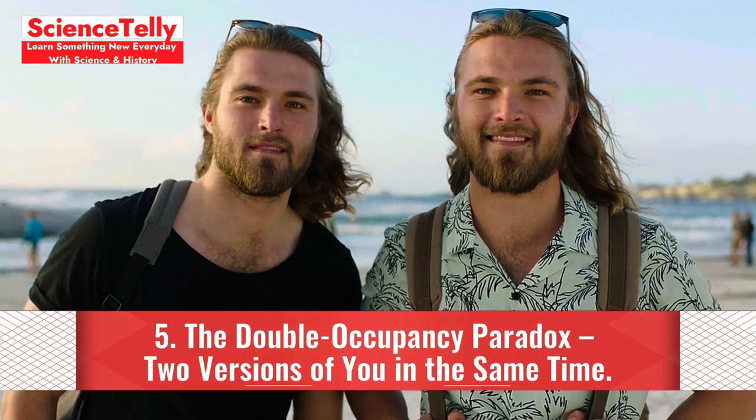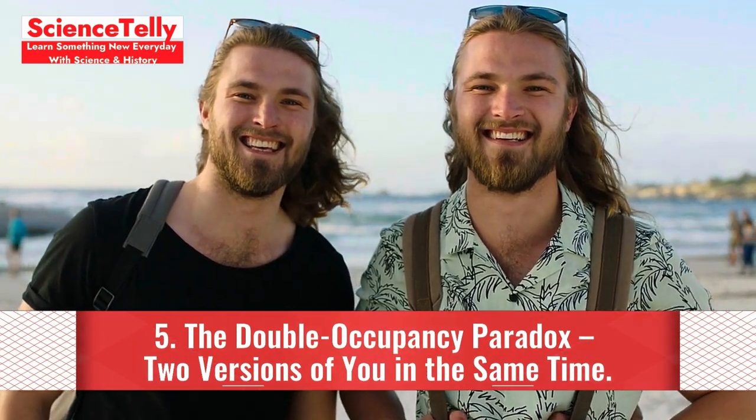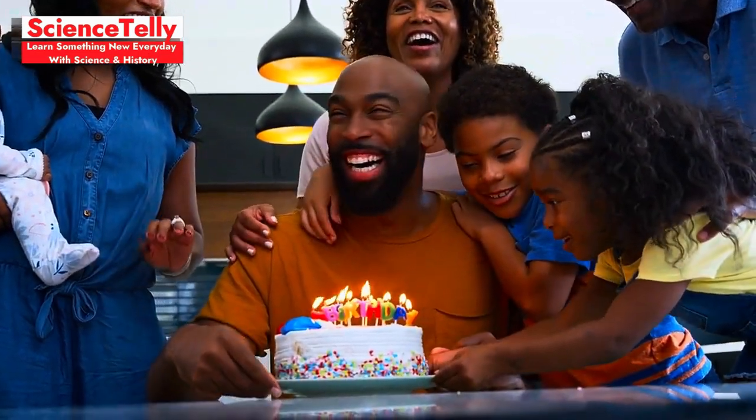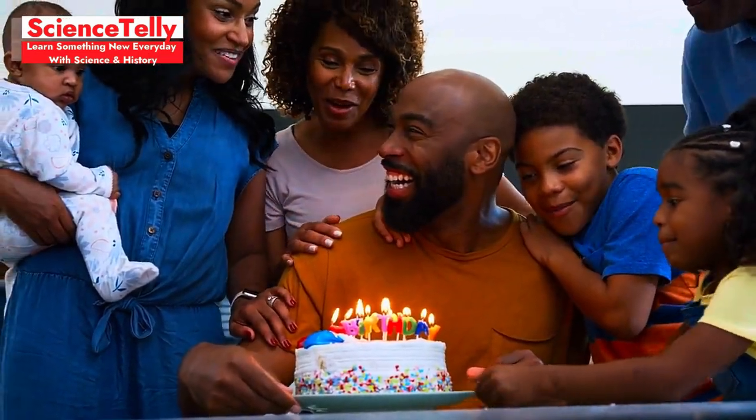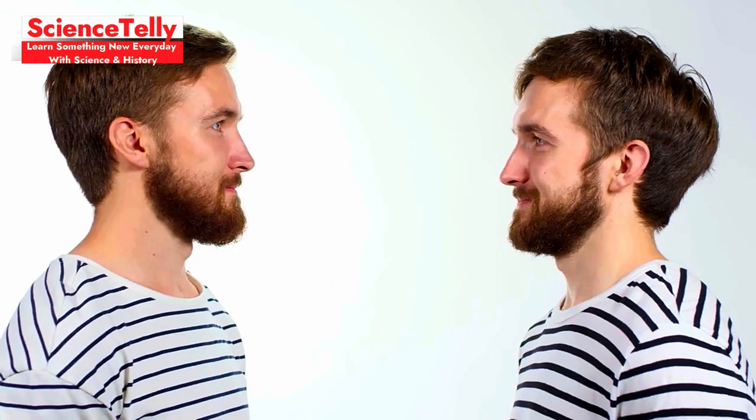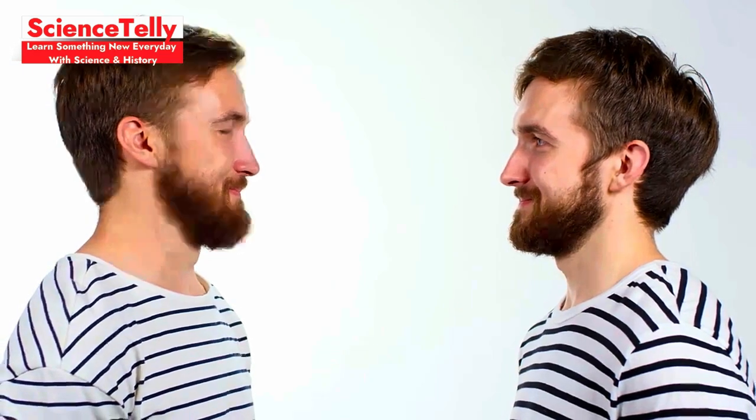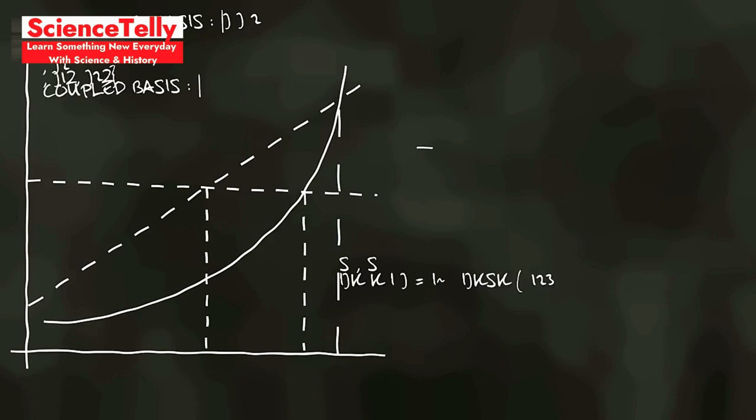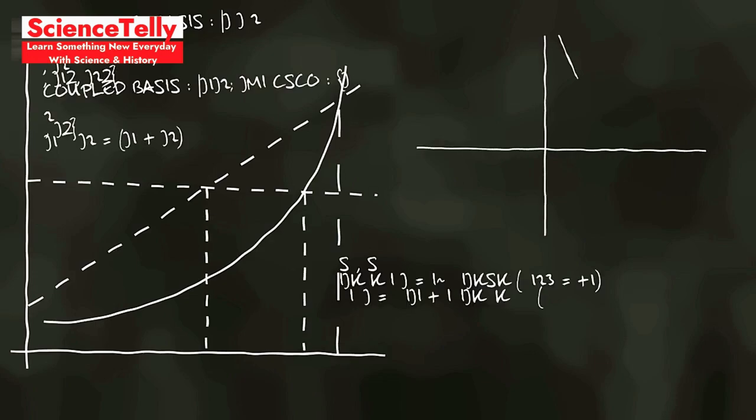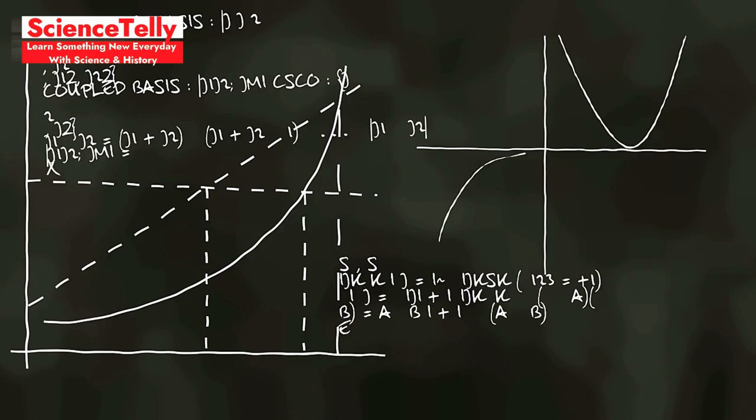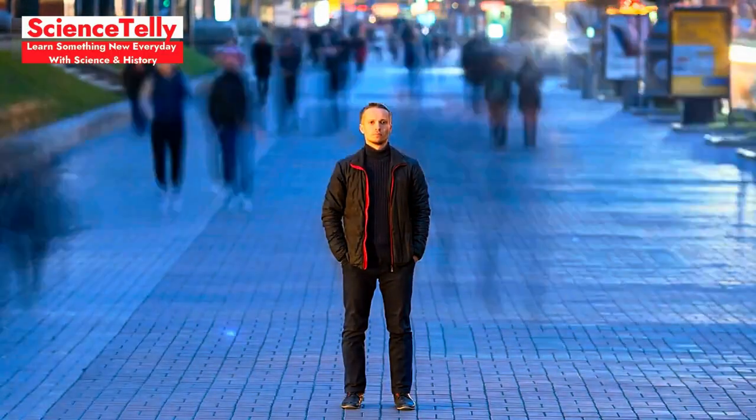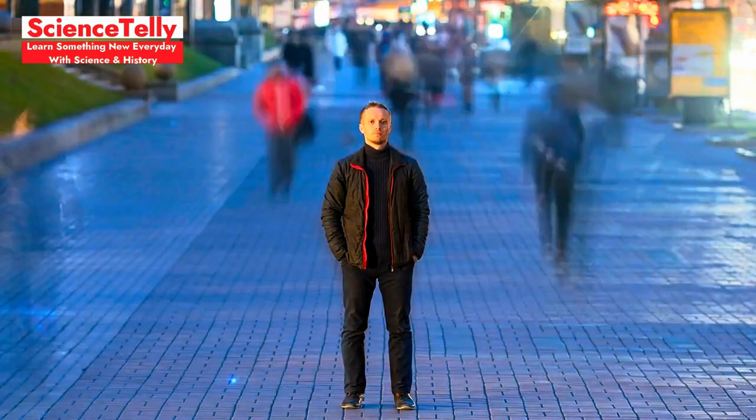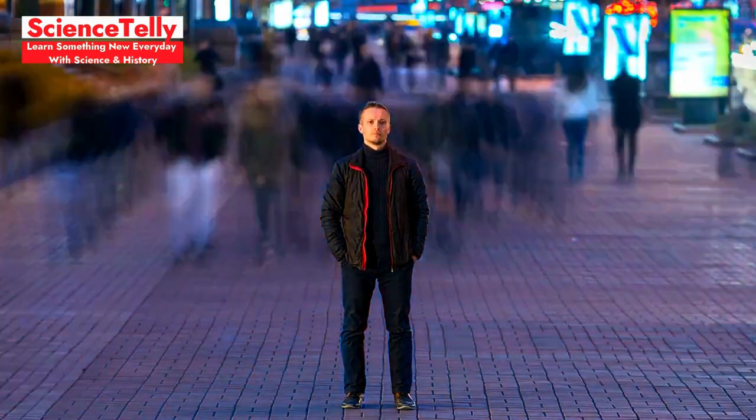Five, the double occupancy paradox, two versions of you in the same time. In the double occupancy paradox, imagine traveling back to your own birthday party last year. Now there are two versions of you in the same time. Quantum mechanics suggests this could disturb reality, as two identical versions might interact in unpredictable ways, almost like a glitch in the universe. Some theories propose that time travel has rules to prevent double occupancy, as duplicating oneself could disrupt the very fabric of reality.